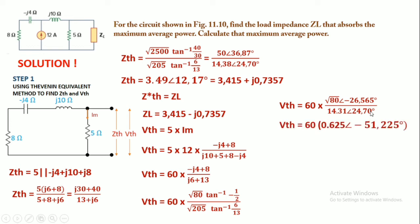So the final value of Vth is 37.5 at -51.225 degrees phase angle.